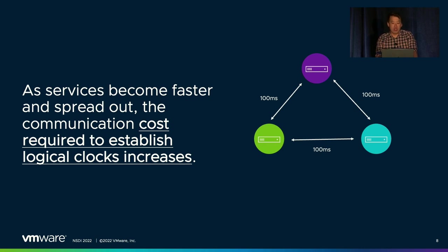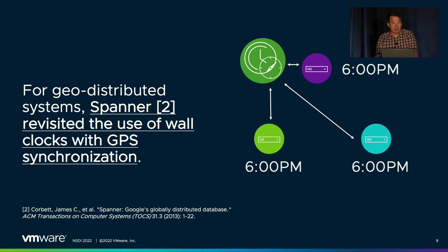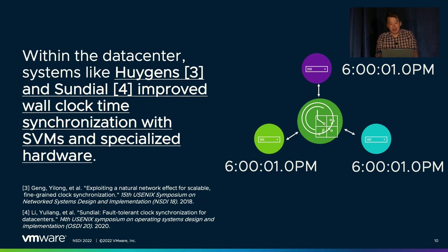For instance, in a geo-distributed setting, each round of communication might take 100 milliseconds in each direction. Since establishing logical clocks usually requires multiple rounds of this communication, it could take over a second to establish a logical clock across continents. Spanner is one of the first widely known works that revisited the use of wall clocks by leveraging GPS clocks at each server. After accounting for clock uncertainty, Spanner enables servers across continents to agree on the time used to serve snapshots. More recent work within the data center, such as Huygens and Sundial, improved synchronization even further.